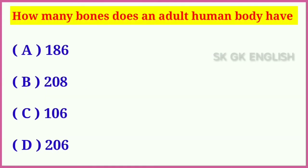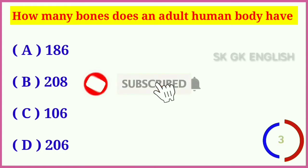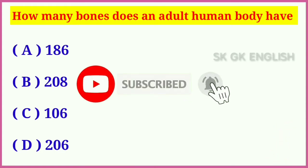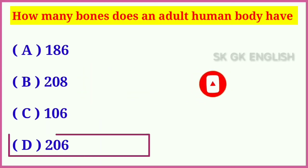Question number six: How many bones does an adult human body have? Options are: A. 186, B. 208, C. 106, D. 206. Correct answer is D. 206.